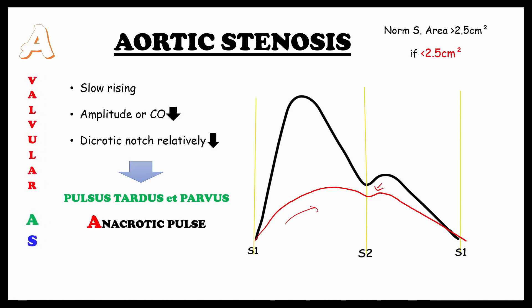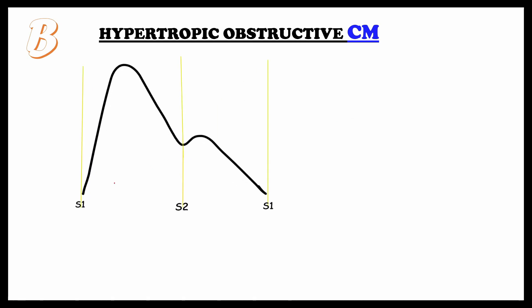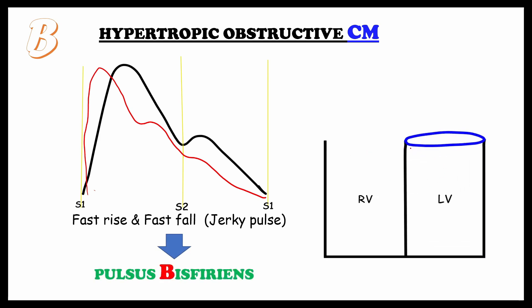Next comes B — hypertrophic obstructive cardiomyopathy. In the pulse pressure graph we can see a forceful rise and forceful fall pattern, also referred to as a jerky pulse. This kind of pulse is called pulsus bisferiens, so B stands for bisferiens.